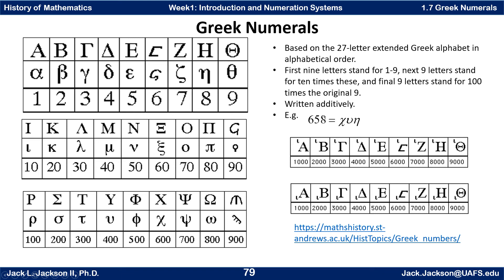The numerals were written additively with the bigger value symbol first. It's not really a place value system, although you do see groupings in tens. For example, 659 would be: 600s — that's chi — then 5 tens, or 50, that's nu — then 8 singles, or 8 units, that's eta. So chi-nu-eta would represent 658.